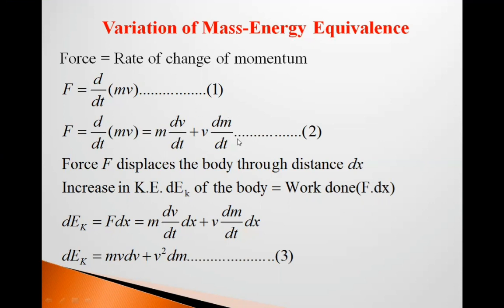So multiply this quantity by dx, this is F, F into dx. So F dx is equal to m dv/dt into dx plus v dm/dt into dx. So dEk is equal to mvdv plus v into v, v square into dm, equation 3.